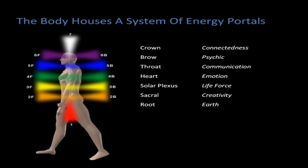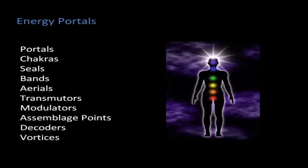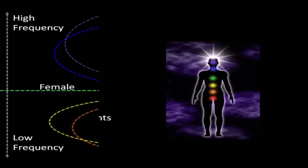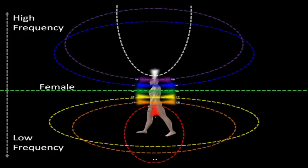If all your energy is being filtered through the brow and the throat, you'll do well, because you can communicate well and you have some kind of psychic impulse. But unless all those portals are open, the energy we talk about cannot flow through the system properly — you miss parts of the spectrum. These portals are more commonly known as chakras, spinning wheels of energy. Also known as seals, bands, assemblage points, decoders, vortices. They represent a potential energy interpretation in the body that goes below the level of words, below the level of information as pure energy.